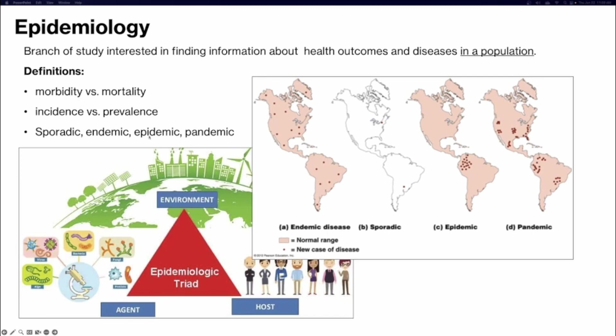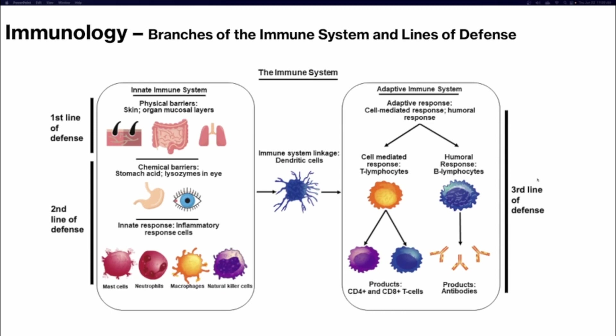A sporadic disease is not linked to a specific region and happens very sporadically — it could potentially happen anywhere at any time. An endemic disease is specific to a certain location with a normal range where it occurs, usually at a very low incidence. An epidemic is concentrated in a specific region at a higher incidence than normal. A pandemic is a disease happening globally with a higher incidence than normal.